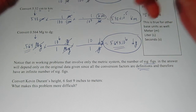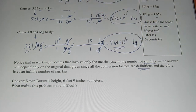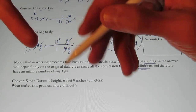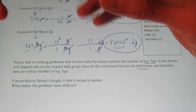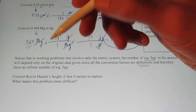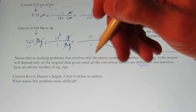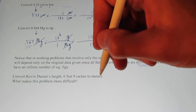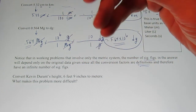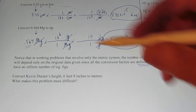All right, we're back. We've just been converting using dimensional analysis within the metric system. We're now going to shift gears and go from the English system into the metric system, also using dimensional analysis. We'll start today by doing this problem: Kevin Durant, a famous basketball player, turns out to be six feet nine inches tall. I'd like to convert that to meters so I could give his height to a friend in Europe.